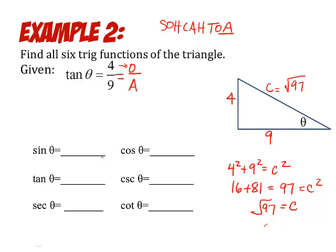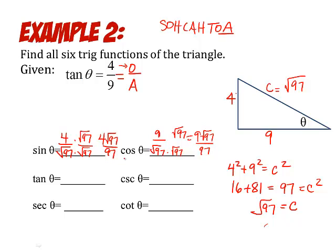So now we run through the ratios again. Sine is opposite over hypotenuse. You must rationalize: 4 square root of 97 over 97. Cosine is adjacent over hypotenuse. Again, rationalizing. Doesn't reduce, we're okay. Tangent is 4 ninths. They told us that.